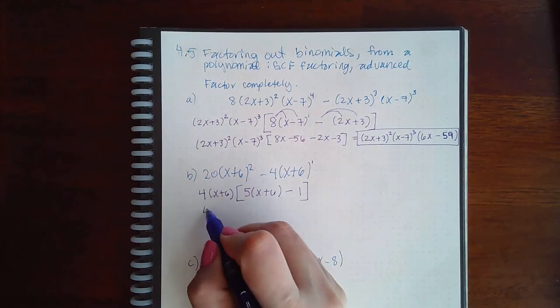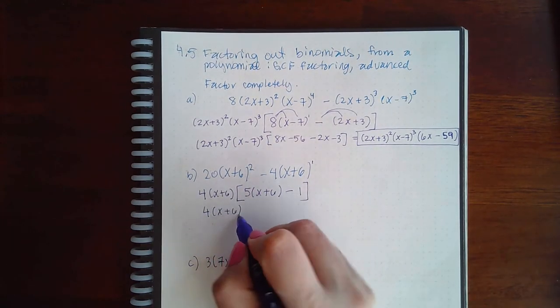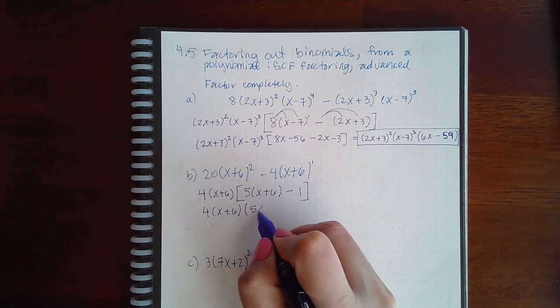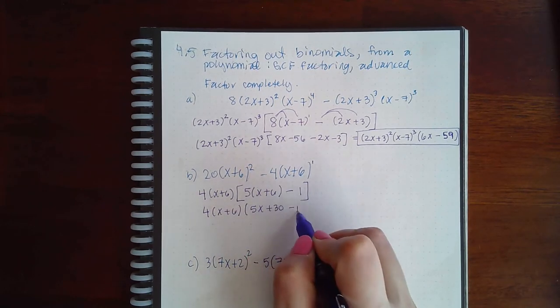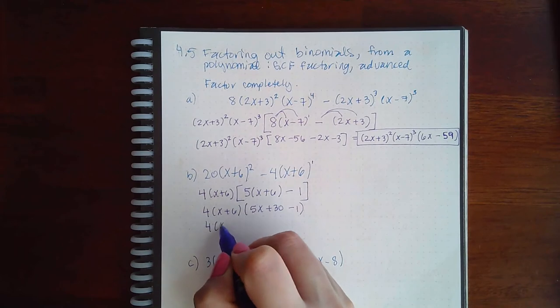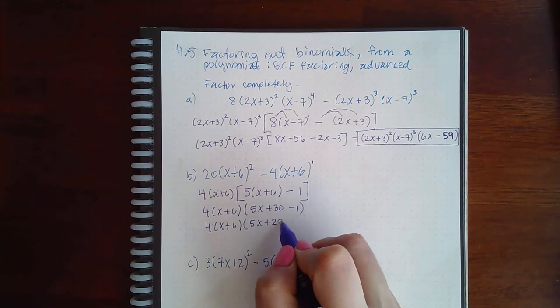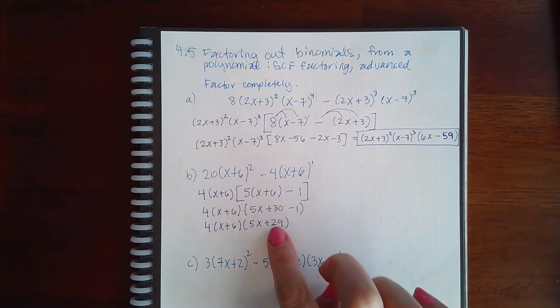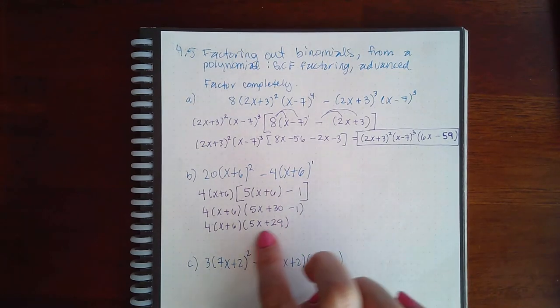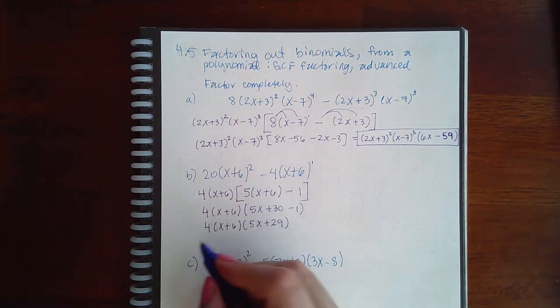Then if I simplify what's inside that bracket, I will get 5x plus 30 minus 1. Simplify that even further, I get 5x plus 29. 29 is prime, which means I cannot factor this any further. This is my final answer.